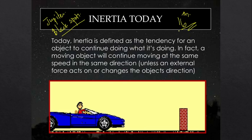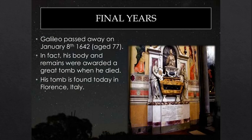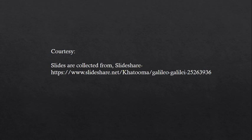He wrote down all his observations in an important book called the Starry Messenger. He also developed many small devices like the Galilean Thermometer, the Galilean Geometric and Military Compass, the Telescope, and the Compound Microscope. He passed away in 1642 and his tomb is found in Florence, Italy. I hope the key points are clear for you. Thank you.